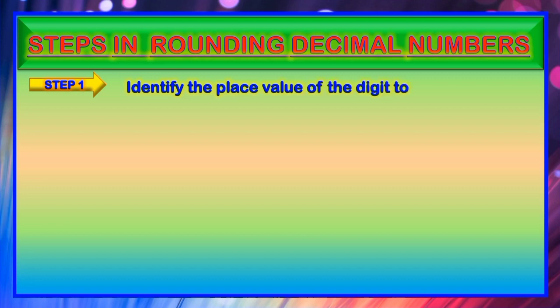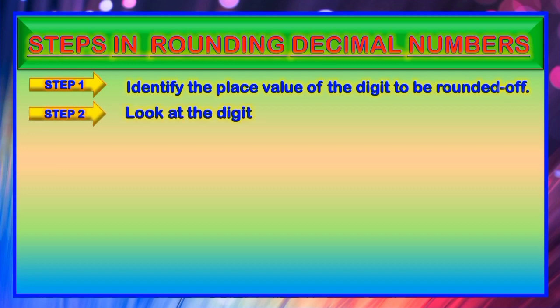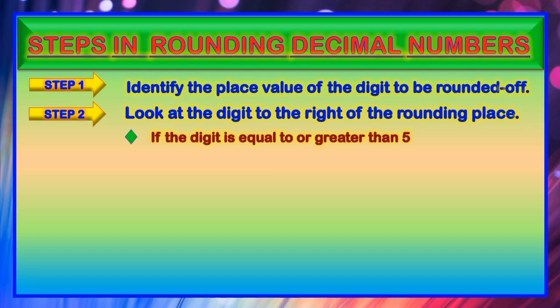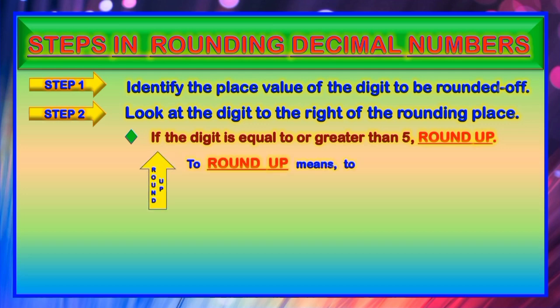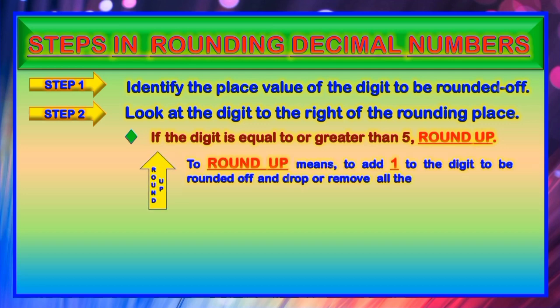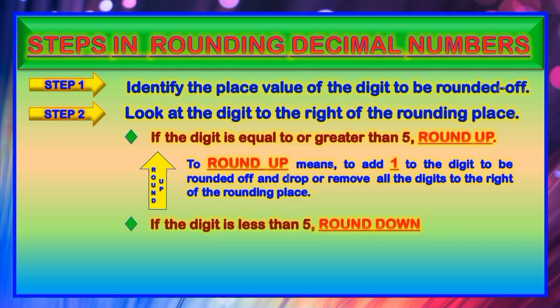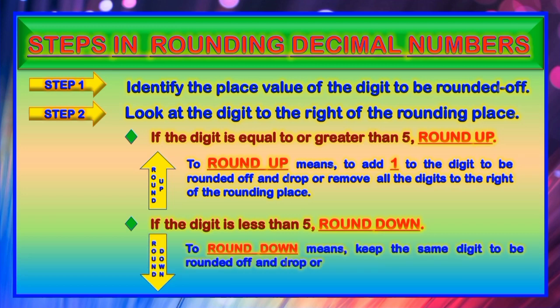Remember these steps in rounding decimal numbers. Step 1: Identify the place value of the digit to be rounded off. Step 2: Look at the digit to the right of the rounding place. If the digit is equal to or greater than 5, round up — add 1 to the digit to be rounded off and drop all digits to the right. If the digit is less than 5, round down — keep the same digit and drop all digits to the right of the rounding place.